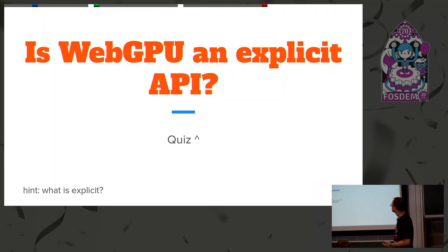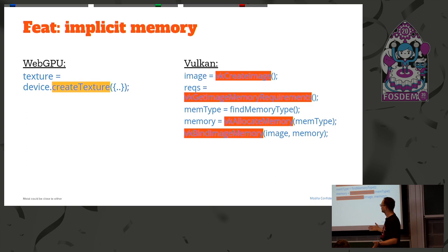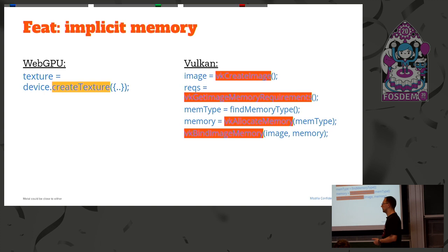Explicit APIs is a long topic, but in Vulkan, to create an image you have to go through four or five steps: figure out requirements, create the logical image, find memory pools, allocate memory, then bind them to the image. There's a lot going on and people make mistakes all the time. In WebGPU it's just one command. By hiding this we introduce some level of uncertainty — maybe you won't have enough memory — but that's the balance we've reached so far.